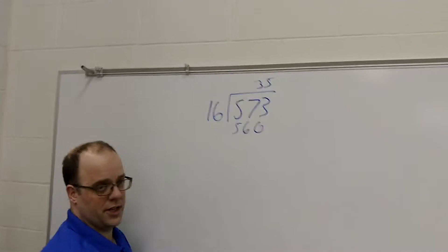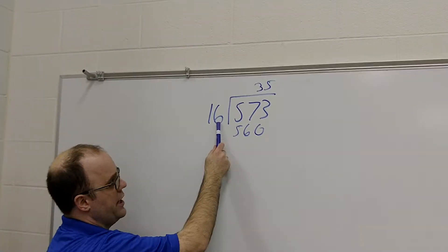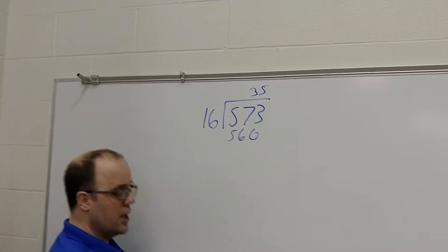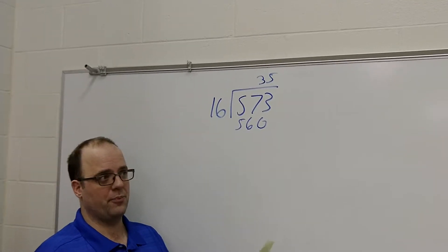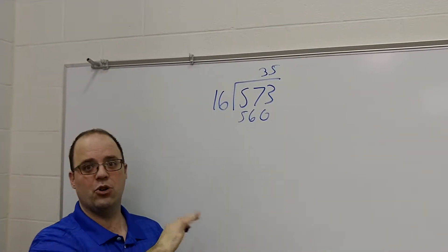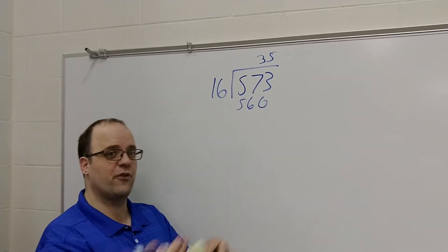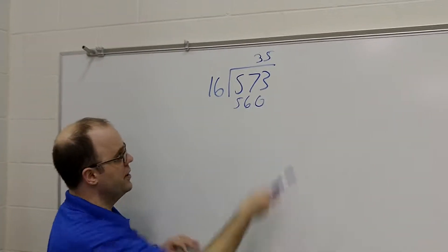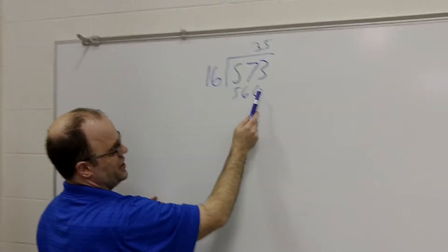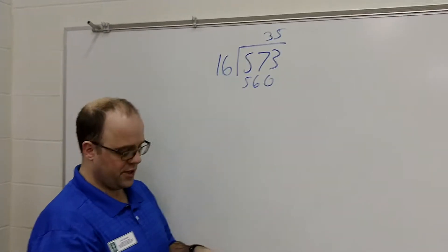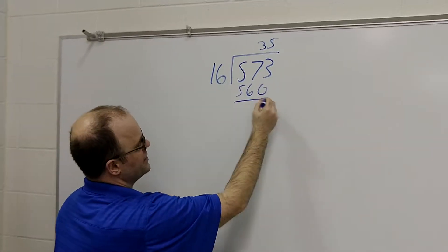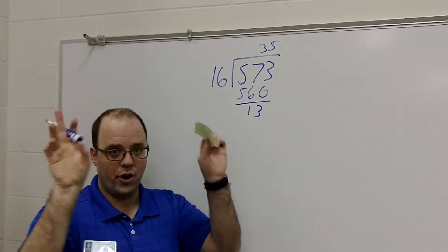And say I have 573. What I need to do is first divide by 16. If you plug this into your calculator, you'll get something like 35 point something something something. Ignore the point something something something and just look at 35. Go back to your first grade days of long division and say 35 times 16, and that will get you 560. And if I subtract it, this gives me the remainder.